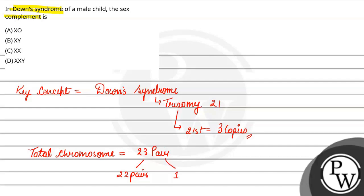22 pairs are autosomes. And the last pair, which is one pair, they are sex chromosomes. This is what we know.